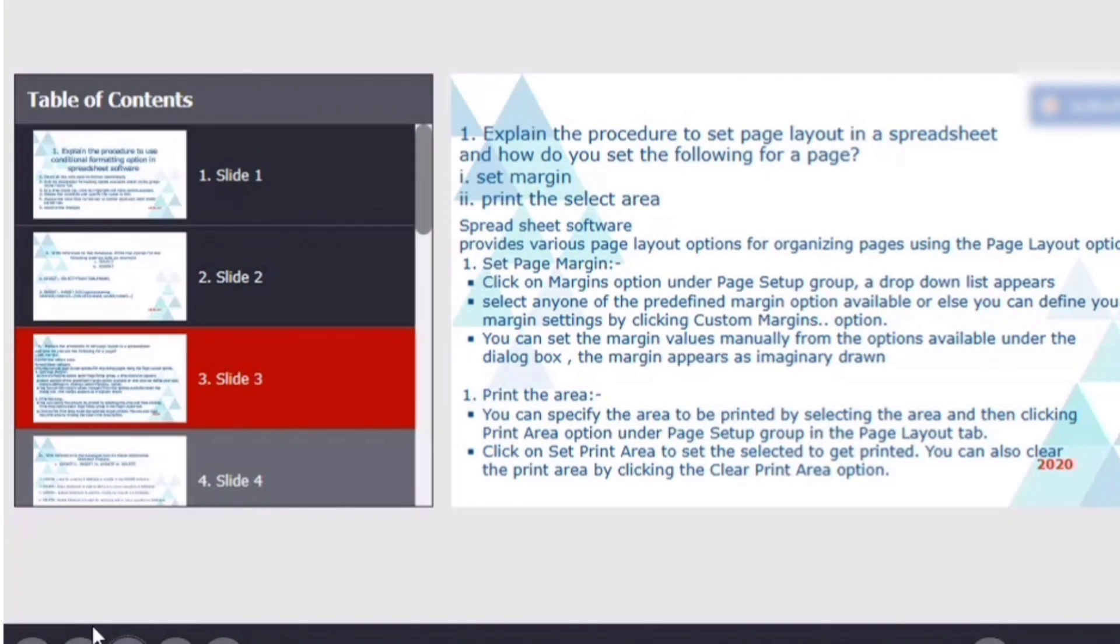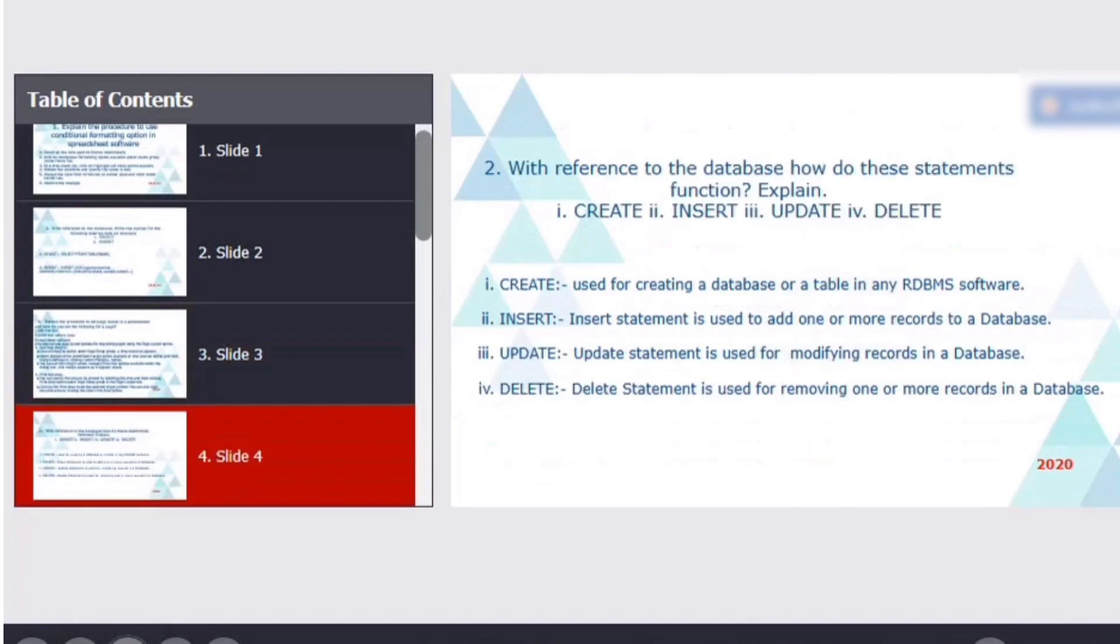So the next one is printing the selected area. You can specify the area to be printed by selecting the area and then clicking print area option under page setup group in a page layout tab. So print area option is available under page setup group in a page layout tab. Clicking on the set print area selected to get printed. You can also clear the print area by clicking on clear print area option.